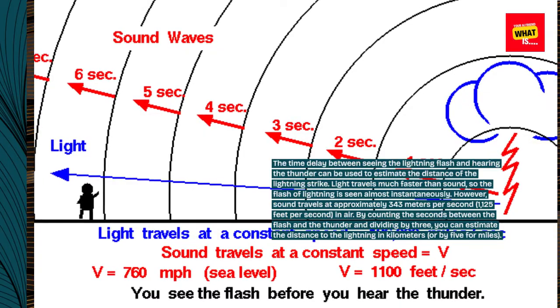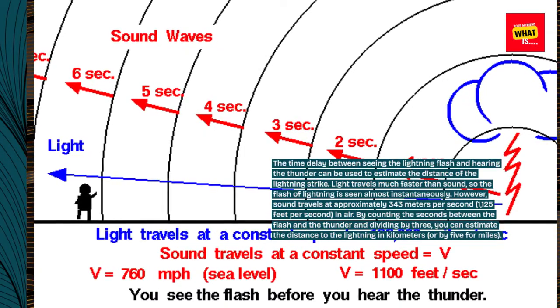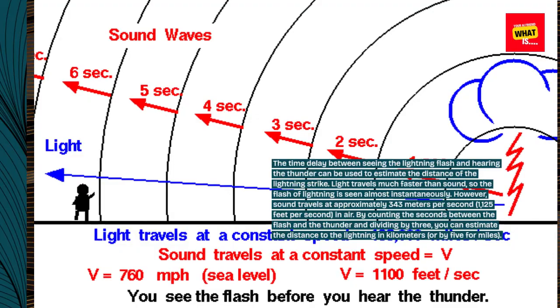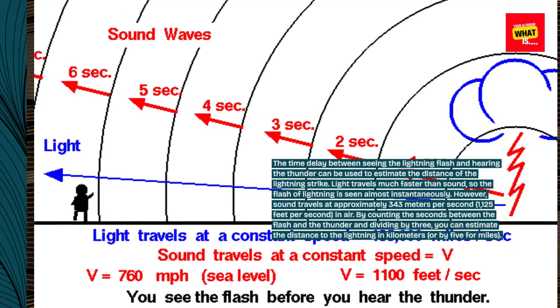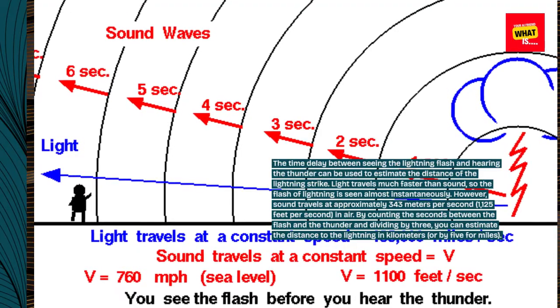By counting the seconds between the flash and the thunder and dividing by three, you can estimate the distance to the lightning in kilometers, or by five for miles.